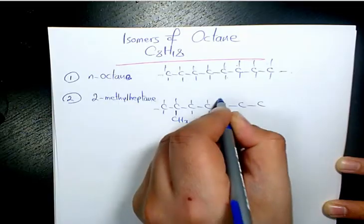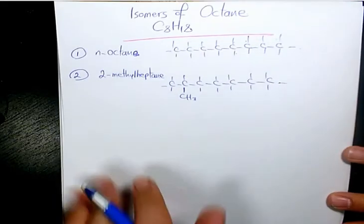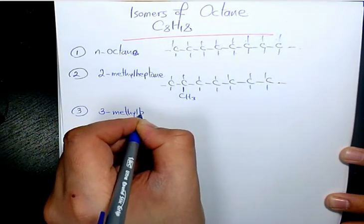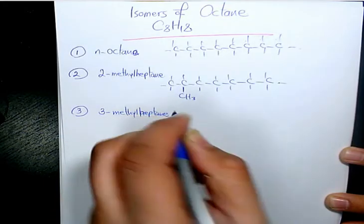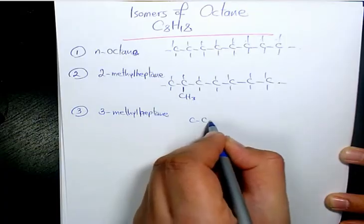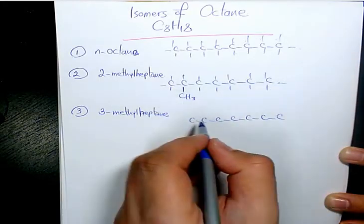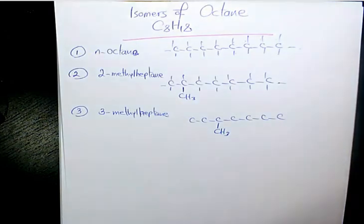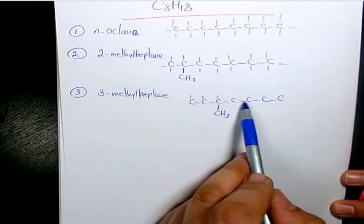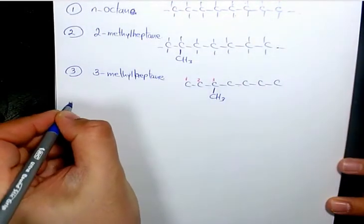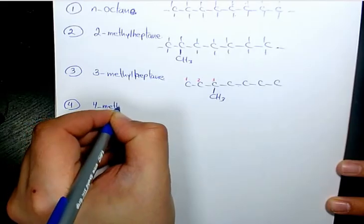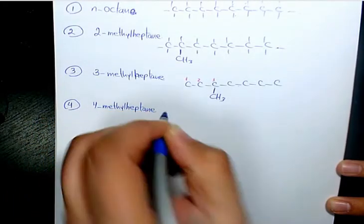Number three is going to be 3-methylheptane, which is 1, 2, 3, 4, 5, 6, 7 carbons — very similar to the previous one, but the methyl group location is different. It's going to be on the third carbon. We start numbering from this side: 1, 2, 3. That's why we have 3-methylheptane — we have heptane because we have seven carbons on the main chain.